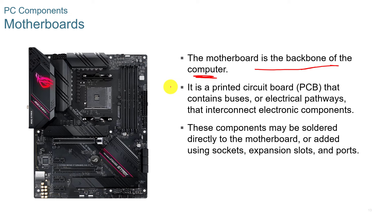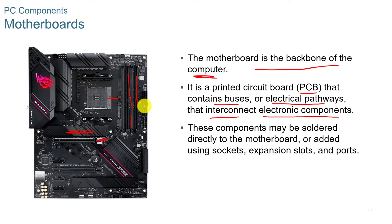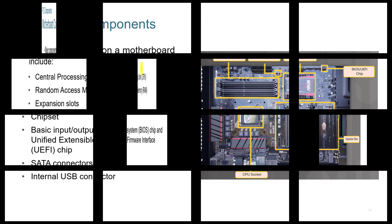The motherboard is the backbone of the computer. It ties everything together from the CPU to expansion cards to memory, and it's a printed circuit board or PCB. It contains buses — electrical pathways that interconnect electronic components. Components could be soldered directly to the motherboard or added using sockets, expansion slots, and ports. Major components on a motherboard include the CPU socket, RAM slots, expansion slots, chipset, BIOS, UEFI chip, SATA connectors, and internal USB connectors.